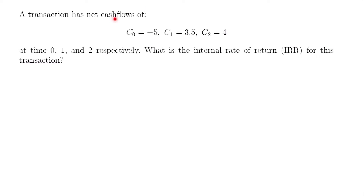Welcome back. Let's start with this example. We have that a transaction has net cash flows of C sub 0 which is equal to negative 5, C sub 1 which is equal to 3.5, and C sub 2 which is equal to 4. These cash flows are made at times 0, 1, and 2 respectively. We want to know what is the internal rate of return for this transaction.